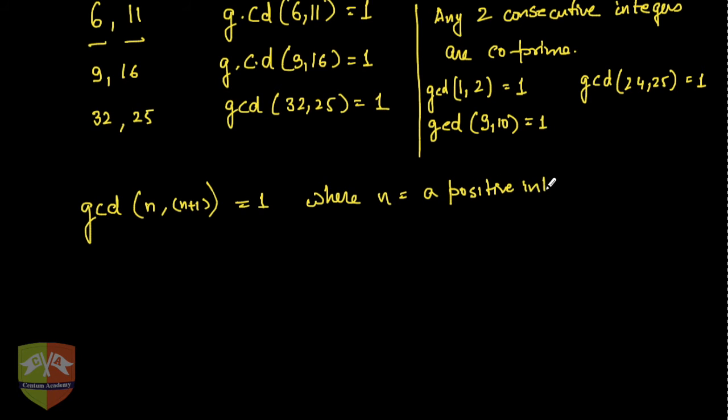Actually it holds true for any negative integer as well, but in number theory mostly we will be concerned with positive integers, so hence typically we talk about positive integers. But it doesn't mean that gcd of two negative consecutive integers would not be one.